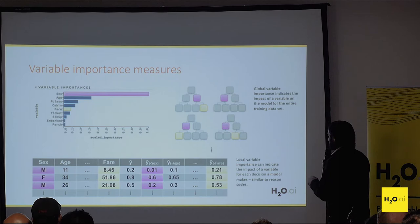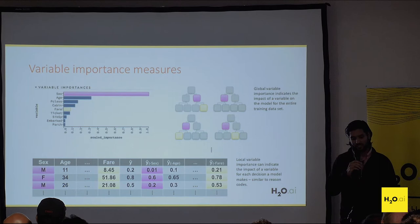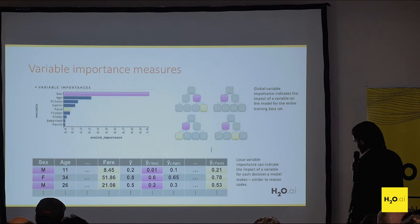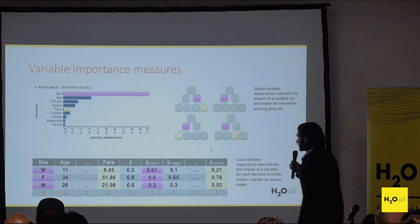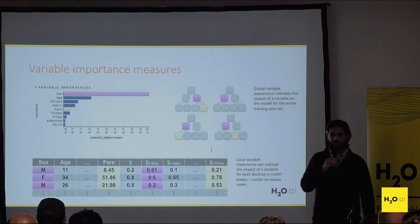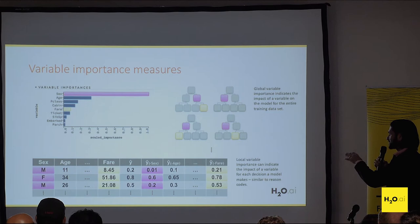The second variable importance technique is called LOCO — leave one covariate out. As an example, say we have a row of data where the first person is male, and their original prediction is y-hat 0.2. We're interested in what happens to that prediction if we set their variable 'sex' to NaN — we remove it — and then get a new prediction.